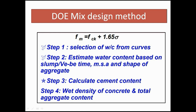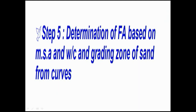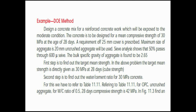I have not given a step number for calculating the target mean strength, because in some problems the target mean strength is directly given. The next step is to calculate the water-cement ratio from curves and tables. Then we estimate the water content based on slump or VB time, and MSA means maximum size of aggregate and shape of aggregate. In the third step we calculate the cement content, and in the next step the wet density of concrete and total aggregate content. Then we determine the fine aggregate proportion based on maximum size of aggregate, water-cement ratio, and grading zone of sand from curves. Now we will see these steps in detail with the help of a numerical.